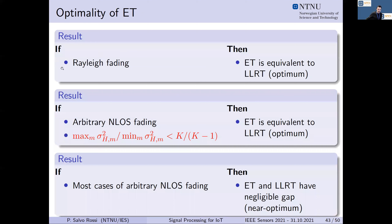It can be proved that in Rayleigh fading, the energy test is statistically equivalent to the optimal test. In arbitrary non-line-of-sight fading, if a specific condition is verified, the energy test is again statistically equivalent to the optimal test. Moreover, in most cases of arbitrary non-line-of-sight fading — meaning most practical channels — energy tests and optimal tests have a very negligible gap, so the energy test is basically near-optimal.